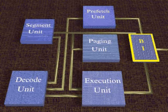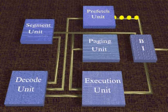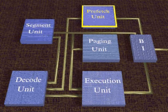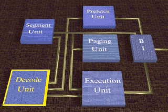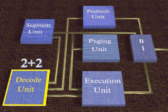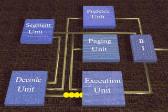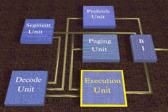Say, to add 2 plus 2 — the BUS Interface Unit passes the instruction along to the Prefetch Unit. The Prefetch Unit routes it to the Decode Unit, which translates it into a language the processor can understand. Finally, the instruction is transferred to the Execution Unit, which carries out the software's commands.